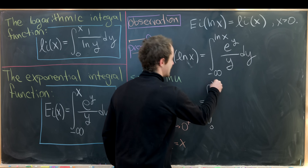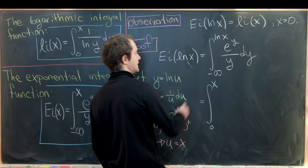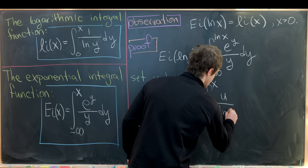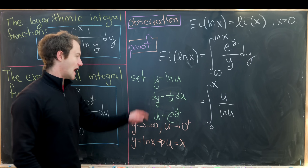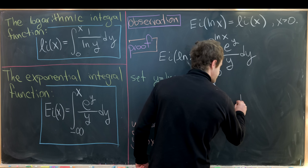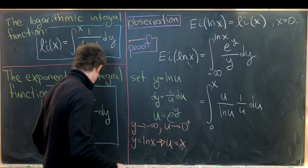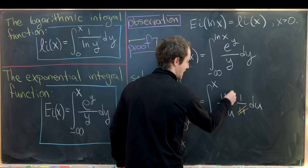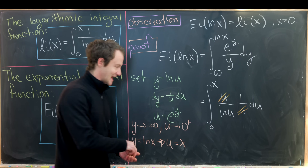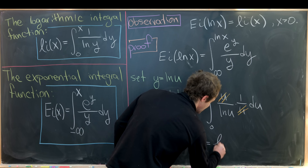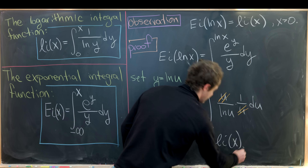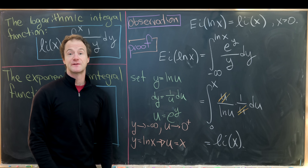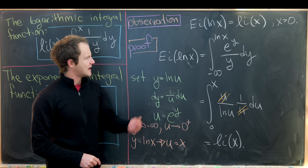The integral becomes the integral from 0 to x, and we write e^y as u, y as ln(u), and dy as 1/u du. Notice that the u in the numerator and denominator cancel out, leaving exactly 1 over ln(u), which is precisely the logarithmic integral function Li(x). That completes the proof.